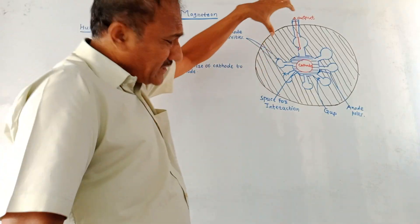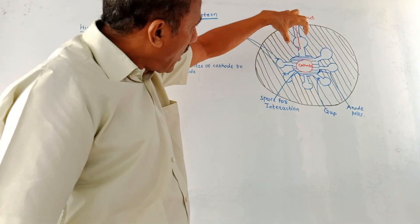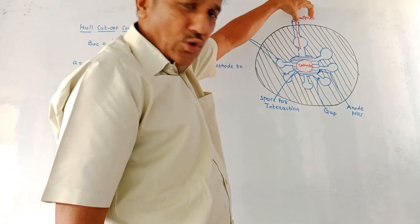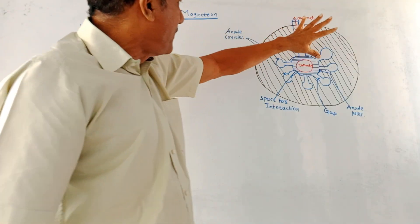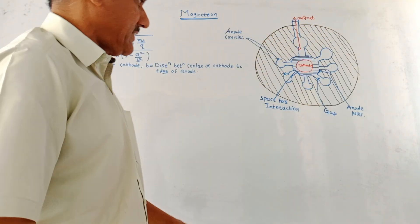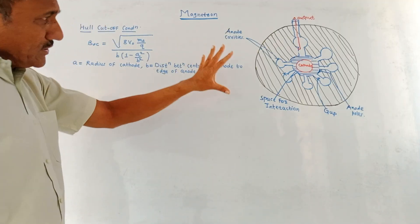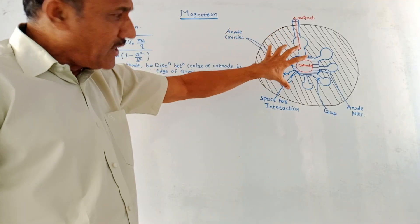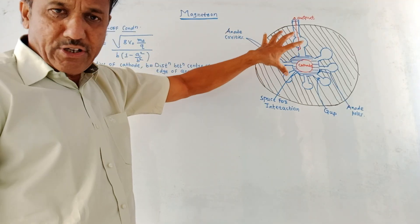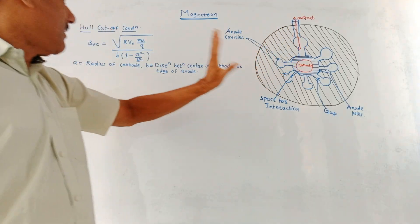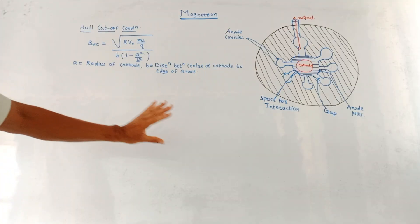As shown in the diagram, the output is taken from one of the anode cavities. This is the construction and working of the cavity or cylindrical magnetron.